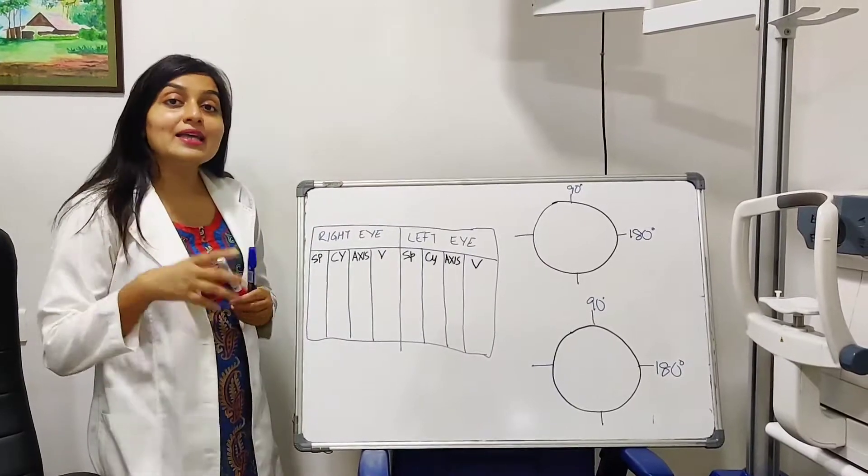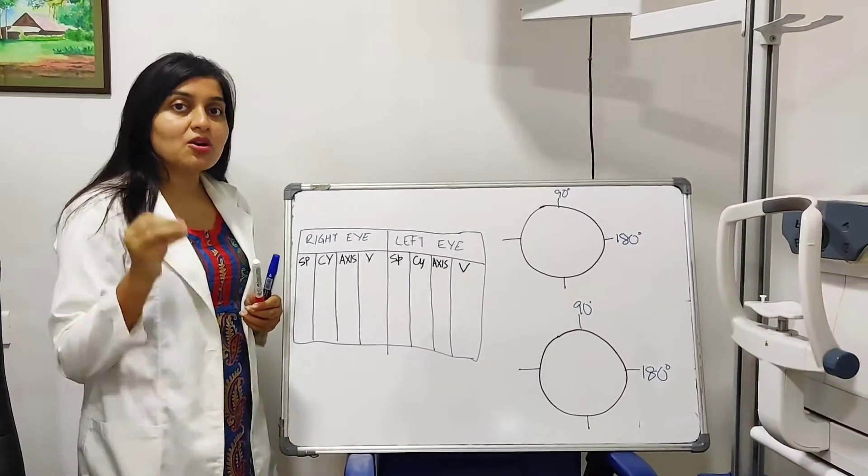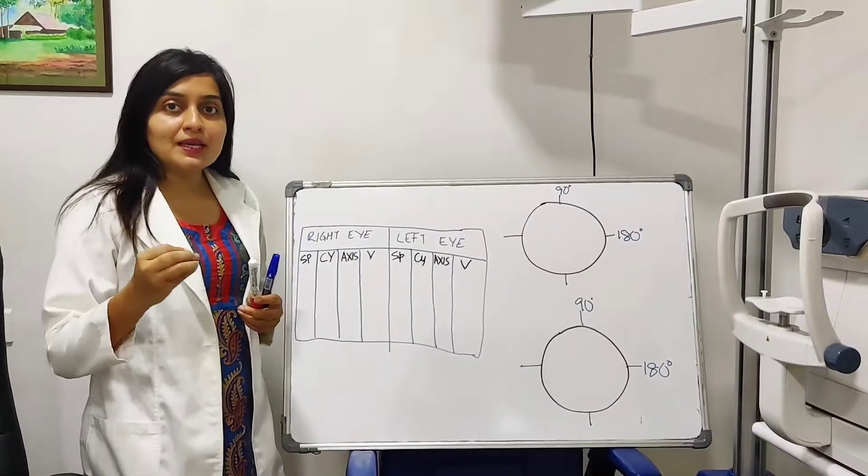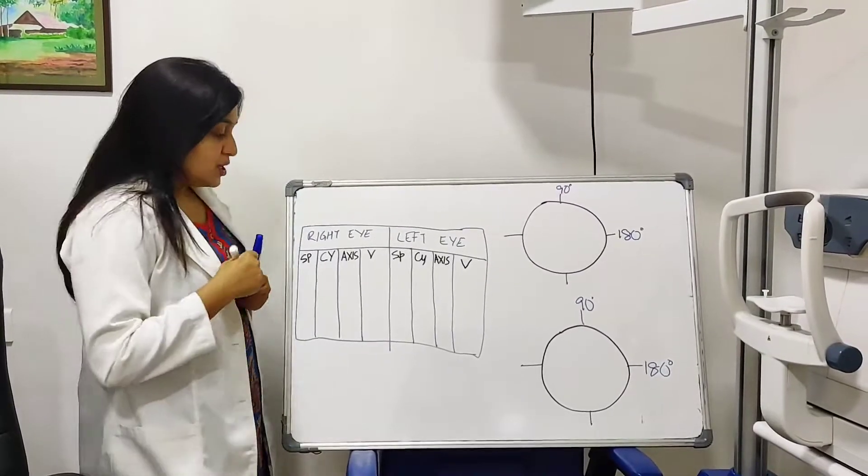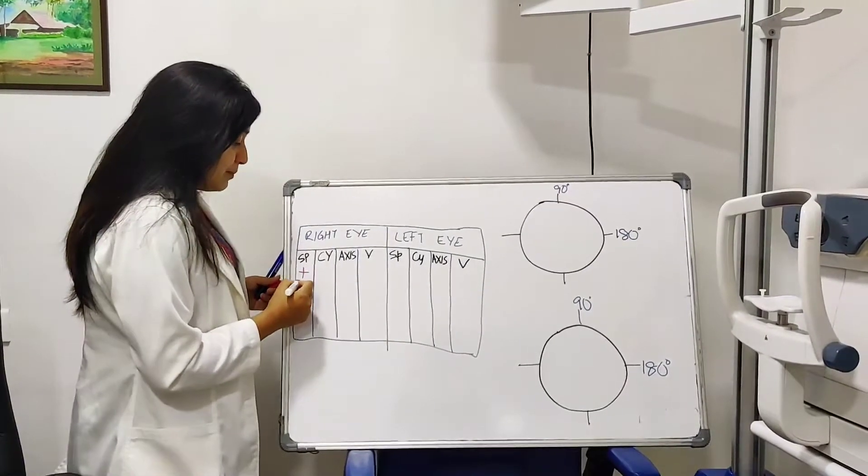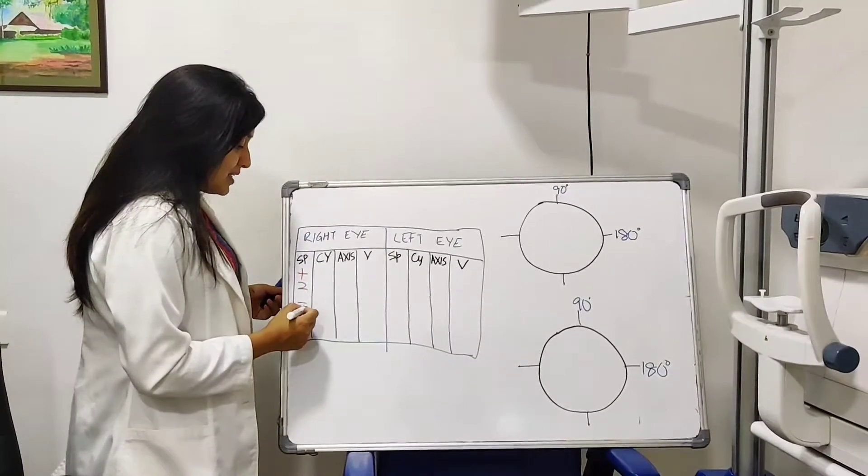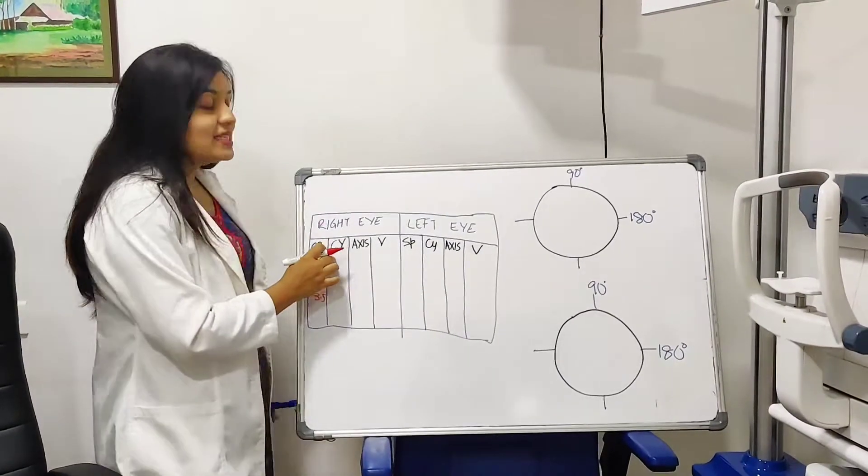So now spherical is where the myopia, is it a myopia, is it a minus number or a plus number? A lot of patients will ask, yeh minus number hai ki plus number hai. So that is what they are asking about is spherical. So this is where you would be either a plus 2, a minus 3, minus 3.5, whatever. This is your spherical number. Now this is the cylinder. A cylinder number can be written in minus or in plus.